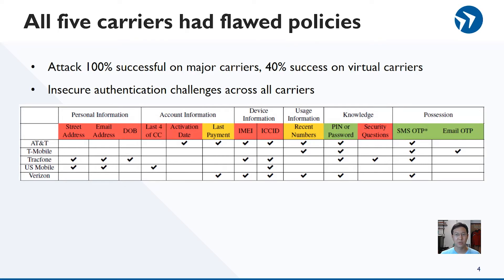This table shown lists all the authentication challenges we saw at least once. We group these into different categories and rate them based on their strength. Red represents insecure, green is secure, and yellow is insecure but previously unknown.